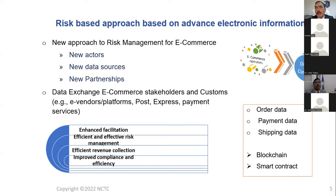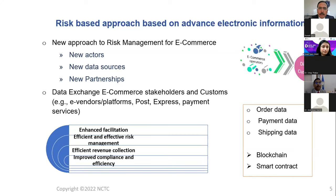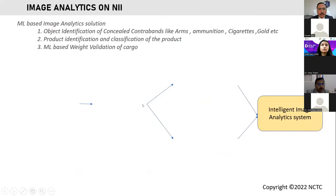There are pilots underway including in Korea, where the moment an e-commerce order is placed, the order data itself gets printed into the customs declaration data — there's no need for someone to file a declaration separately. The advantages: all stakeholders on the platform push data to customs and other government agencies, enabling efficient facilitation of all legitimate shipments. Through smart contracts they can be instantly cleared without involving any customs officer. This also enables efficient and effective risk management, efficient revenue collection through algorithms mapping with tariff and duty rates, and improved compliance.